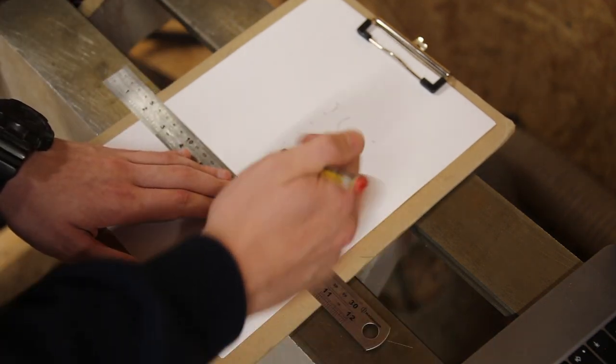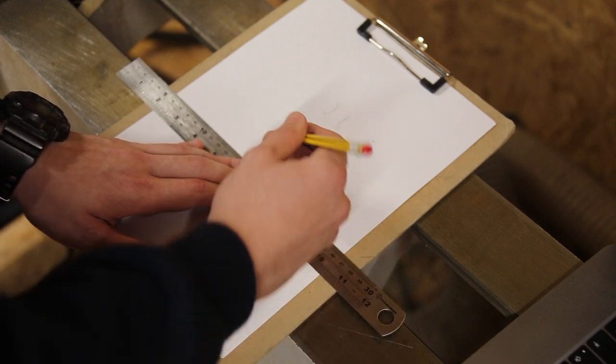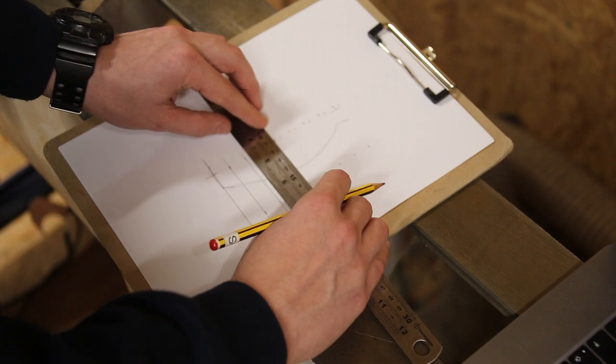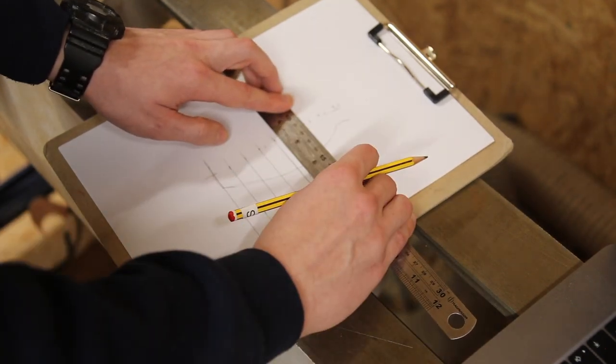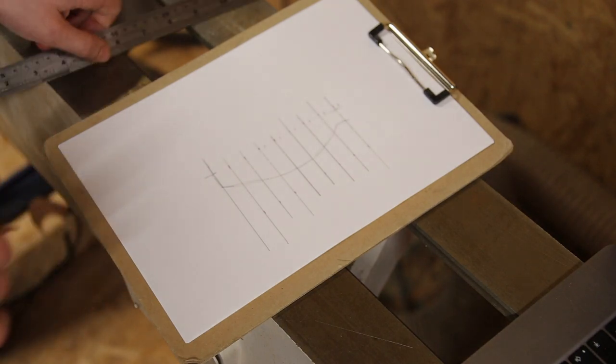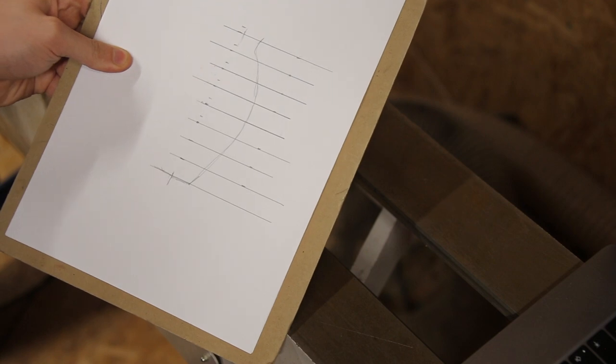Next we want to connect each of these lines with a ruler. So once you've got your plan drawn on paper it should look something similar to that.